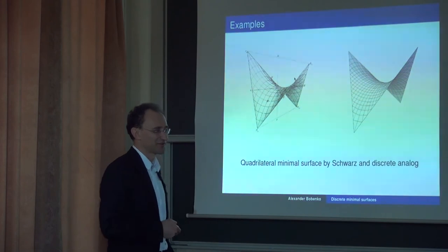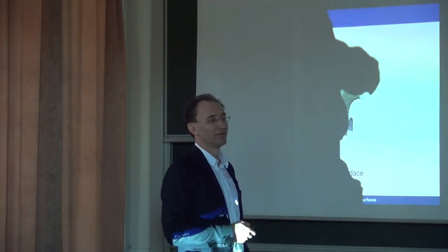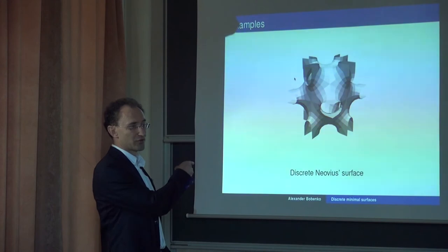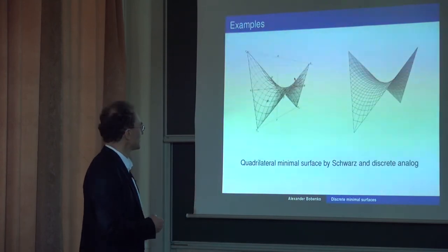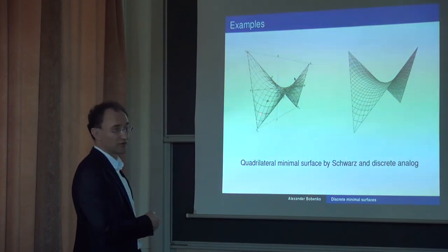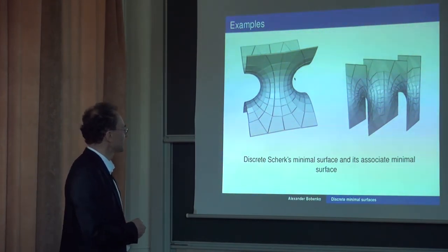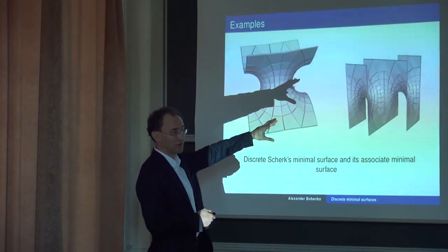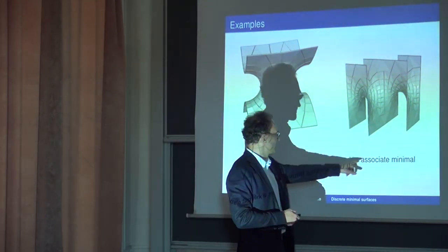Boundary conditions are another story — they can be encoded within this functional and implemented. Some examples: the discrete Schwarz shark minimal surface and also its associate minimal surface, everything discrete and conical — these are the new results about discrete conical minimal surfaces.